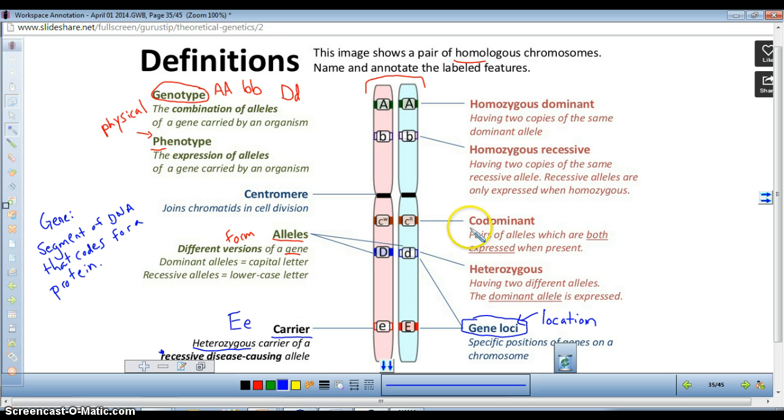Heterozygous, we talked about that. Co-dominant. We talked about co-dominants. Homozygous recessive, homozygous dominant.